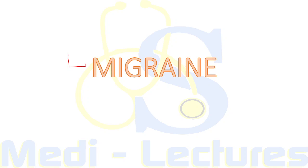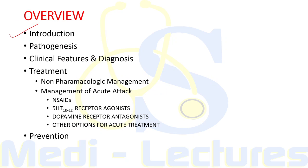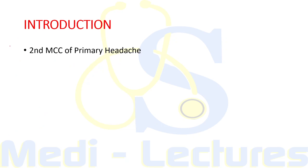Today we are going to discuss a very important topic in neurology: migraine. This is important because it is the second most common type of primary headache — the most common being tension type headache. In this lecture we will discuss the introduction, pathogenesis, clinical features, diagnosis, treatment options including non-pharmacological management and drugs, and finally prevention of migraine.